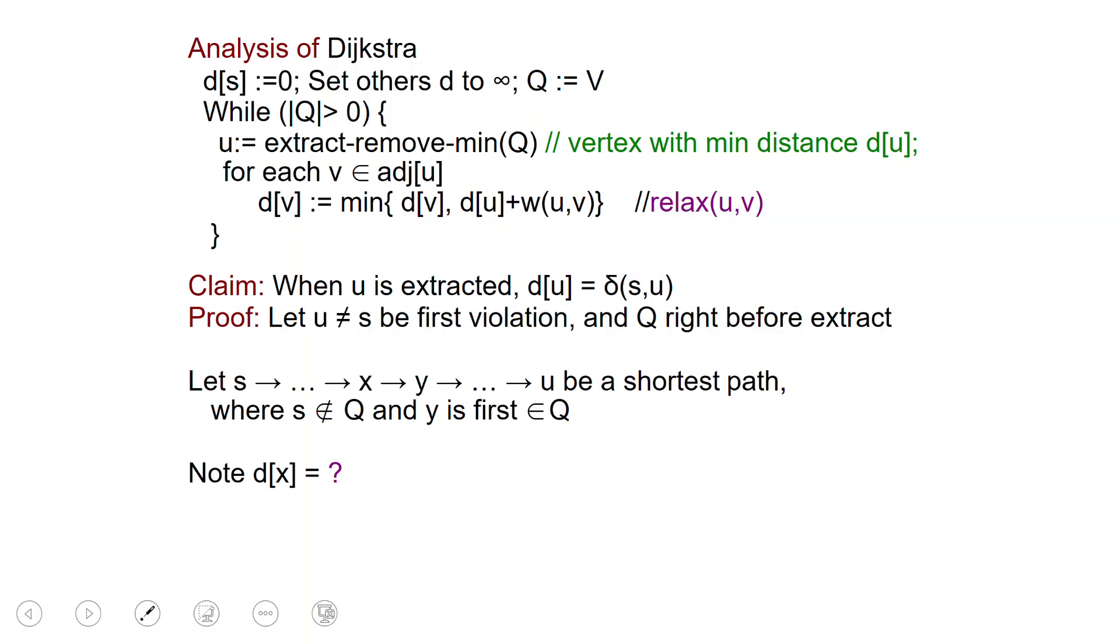Suppose that's not the case and let U be the first node that you extract which does not satisfy this. And let us consider the Q right before U is extracted. Let's take now a shortest path from S to U. S is not in the queue. Some other nodes may not be in the queue. And then let's assume that Y is the first element in the queue along this path. And while U also is in the queue because we're just about to extract it.